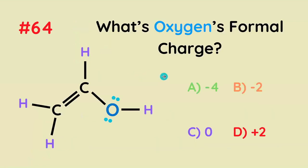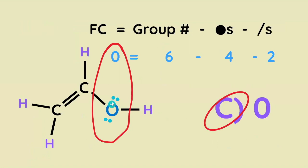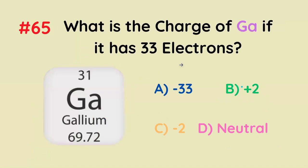What is oxygen's formal charge in this molecule? It's going to be zero, because we calculate formal charge with group number minus the number of dots minus the number of sticks, and we get zero.